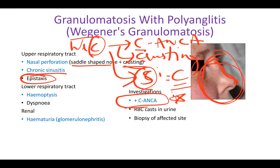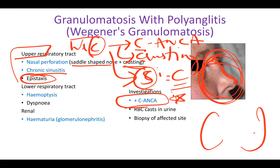There are upper respiratory tract symptoms like epistaxis affecting the nose. The lungs are also affected — since there is a granuloma, that leads to hemoptysis, and you'll also have dyspnea.